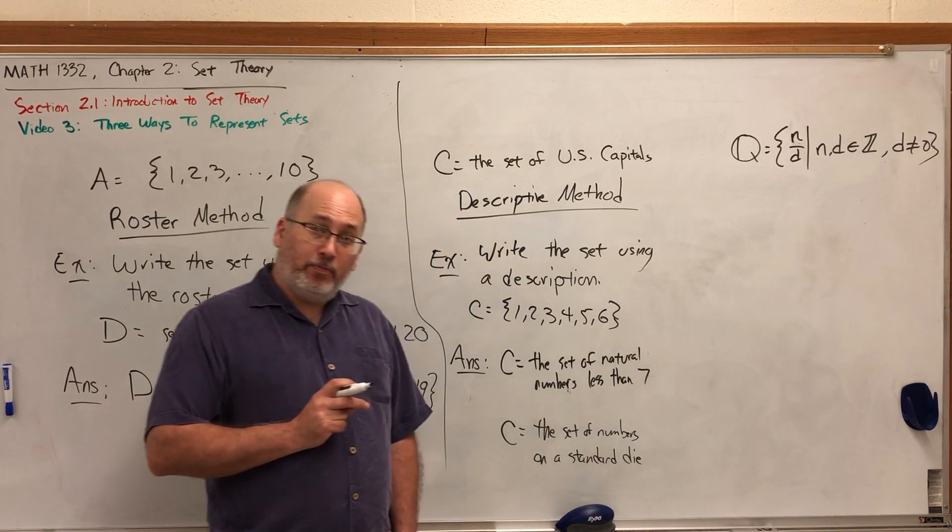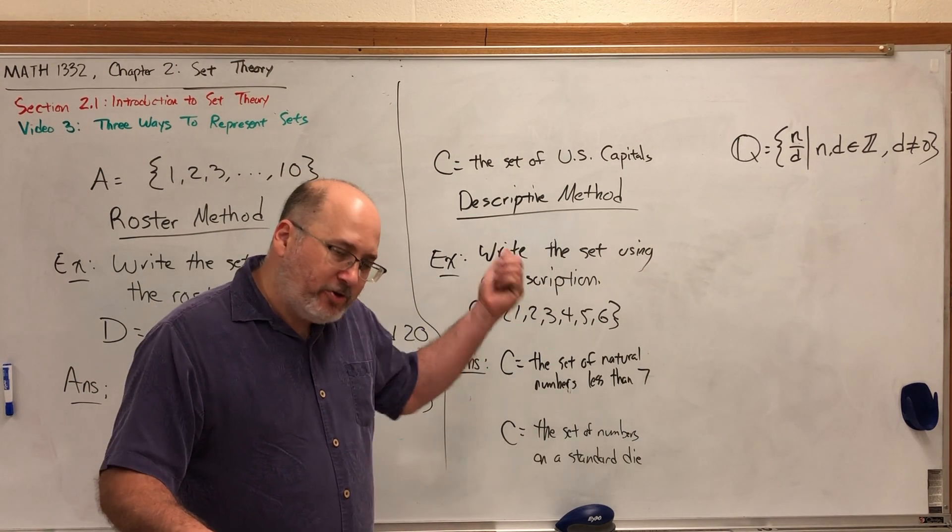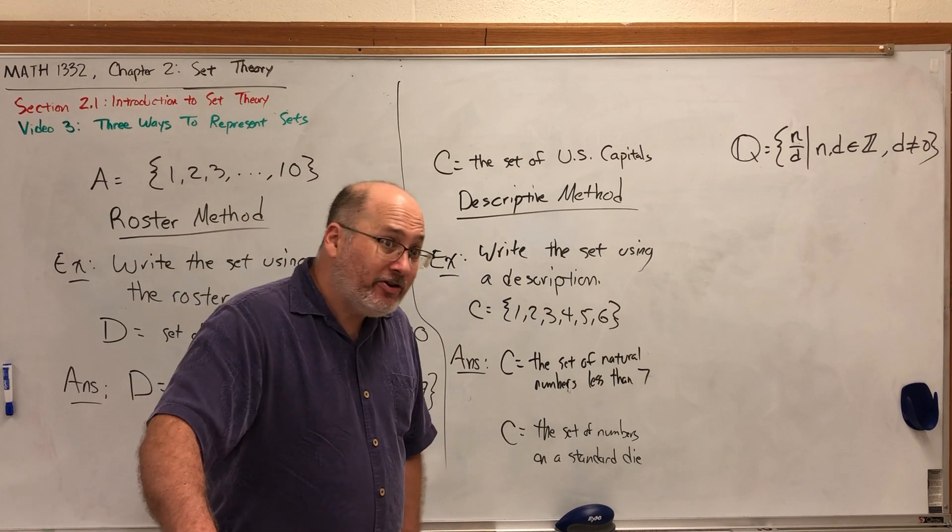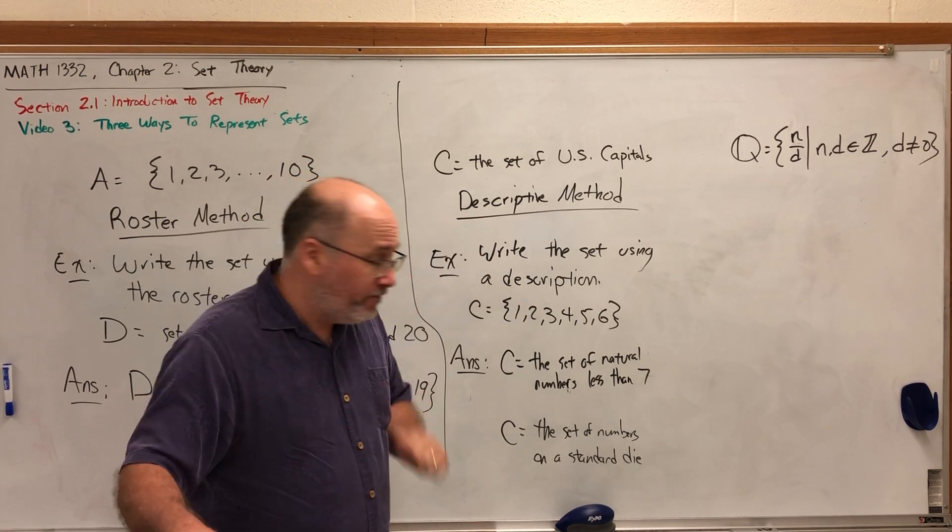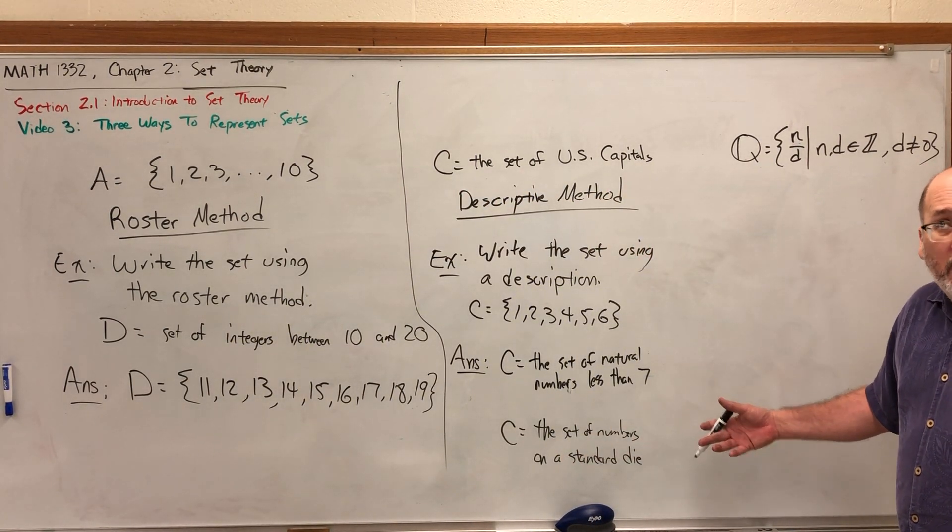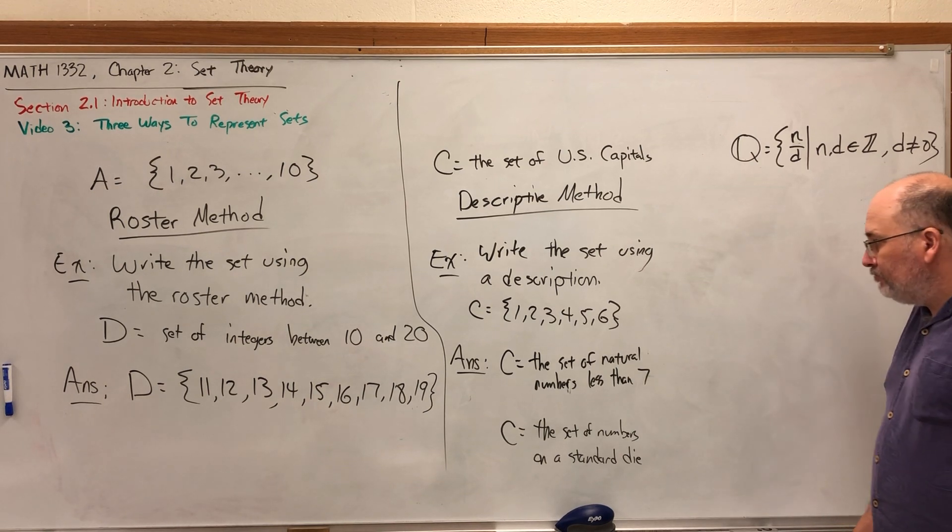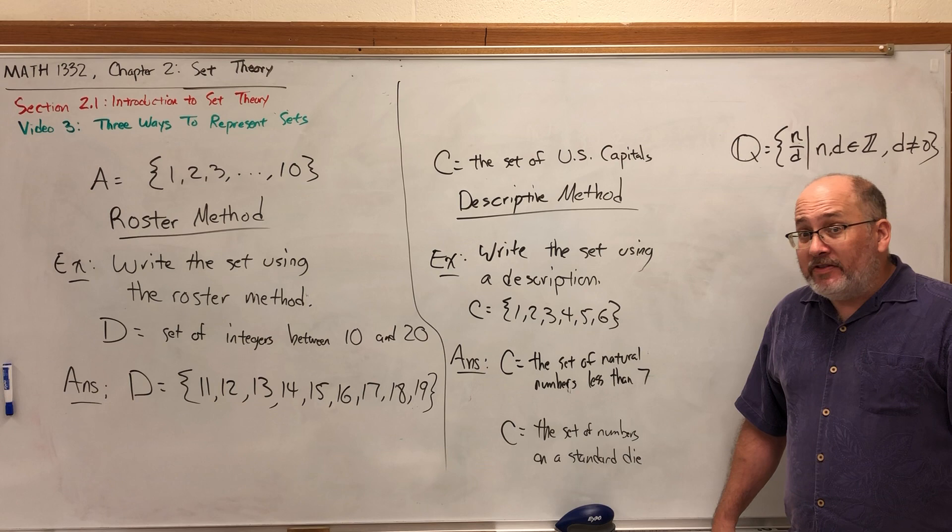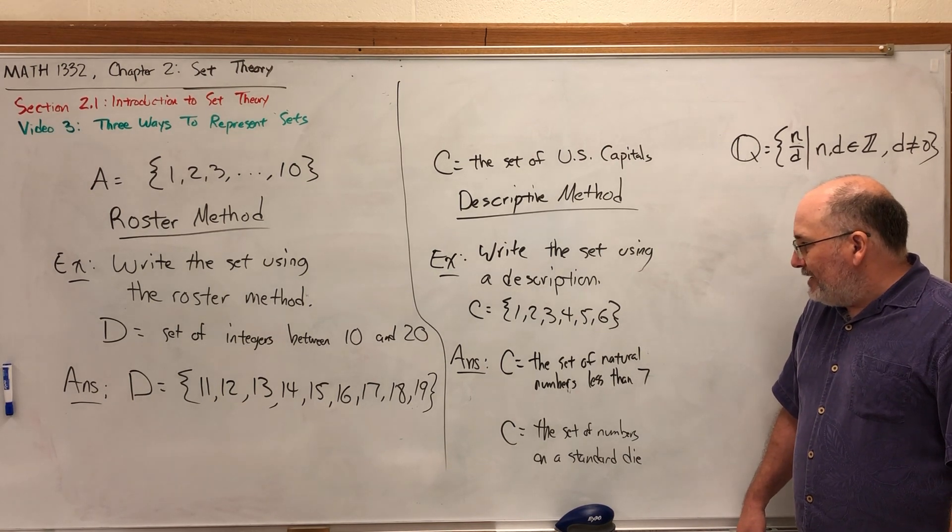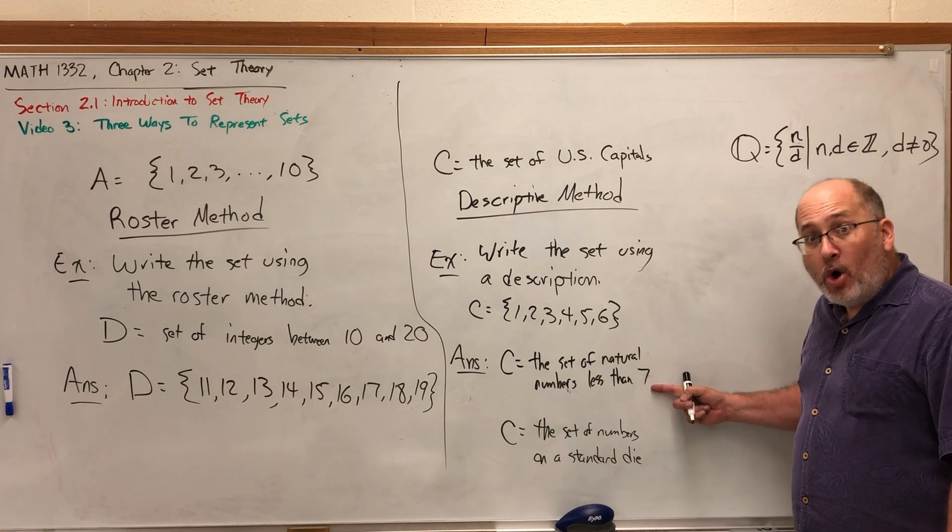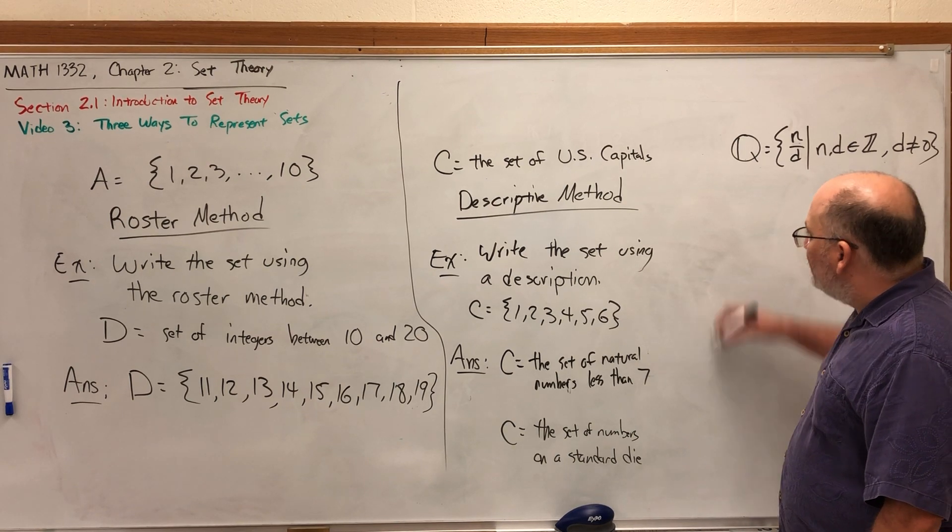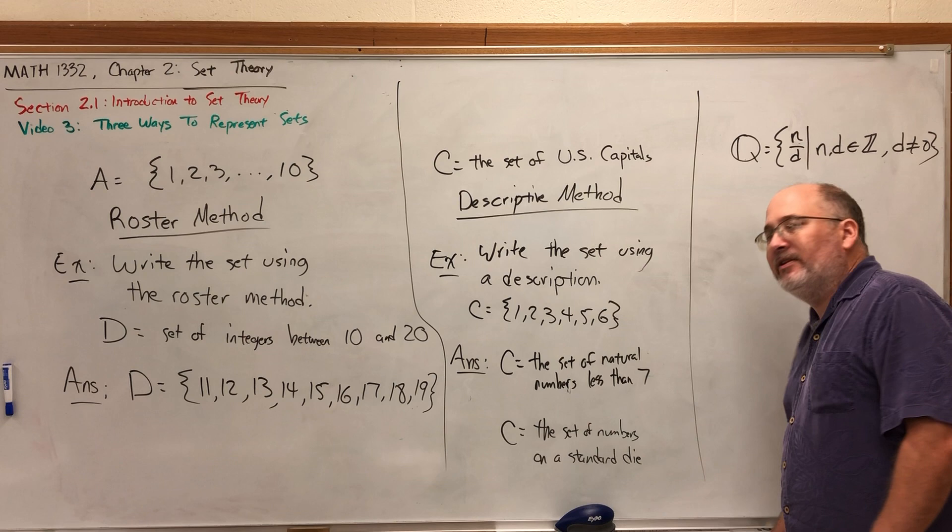We could also say C is the set of numbers on a standard die, D-I-E. People are often more familiar with the plural of die, which is dice. Shake them up, shake them up. But singular it's just a die, and a standard die has six faces with the numbers one through six on them. So there's more than one way to describe a set of numbers or any set. There's usually more than one way to describe any set as long as it's well defined, meaning that you can pass judgment of whether or not an element belongs to the set. Does eight belong to the set? No, no, no. Well defined. Descriptive method: describing the contents of the set without listing them explicitly.